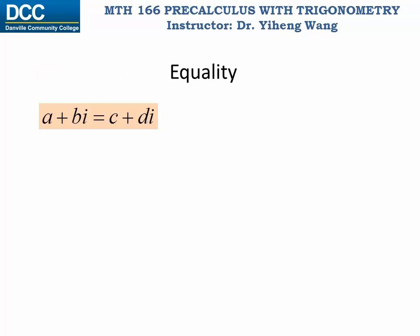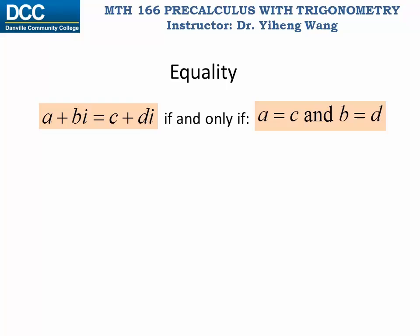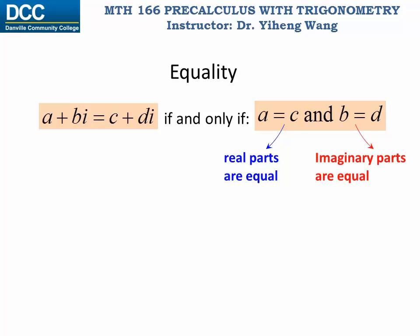If two complex numbers a plus bi and c plus di are equal to each other, this can only mean one thing: that a equals c and b equals d. In other words, both real parts are equal and the imaginary parts are equal.